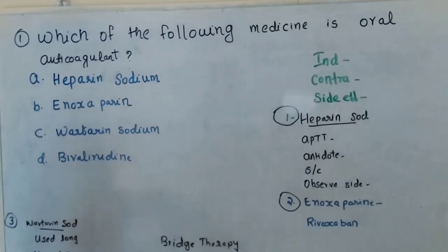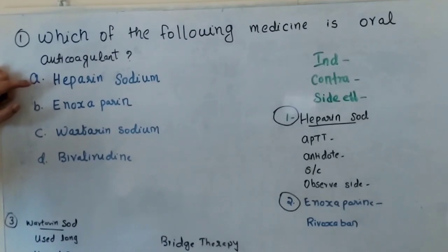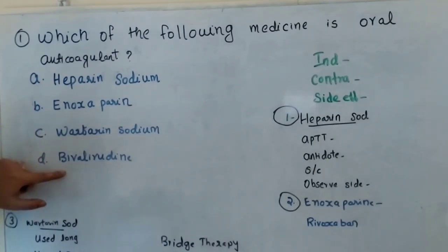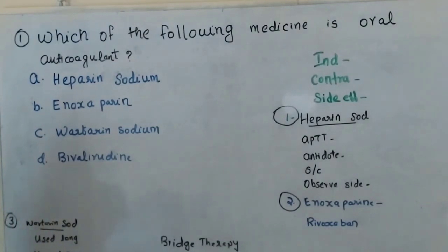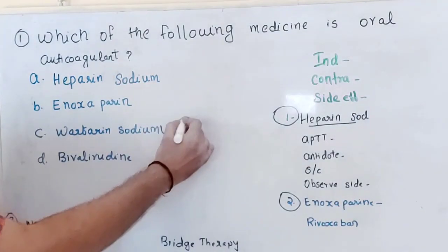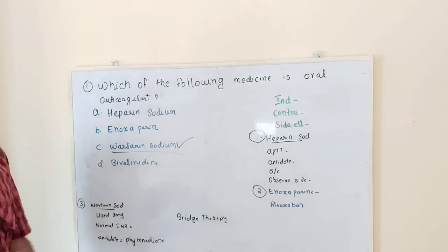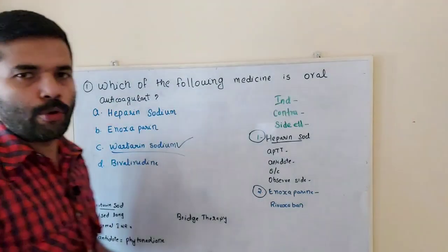Now I am talking about oral anticoagulant. Heparin sodium is IV. Enoxaparin and Bivalirudin are injectable anticoagulants. The answer is Warfarin sodium. Warfarin sodium is an oral anticoagulant.